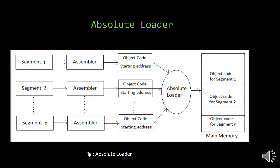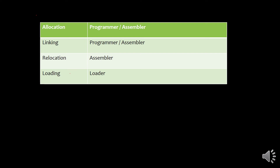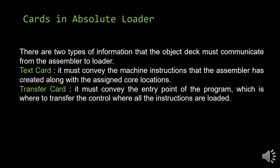Now, if the loader's task is just to load the program into main memory and other things are taken care of by an assembler or a programmer, then how does the loader get this information? Remember, in an absolute loader, the assembler passes all this information in the form of cards. There are two types of cards used in an absolute loader: the first card is called a text card and the second card is known as a transfer card.